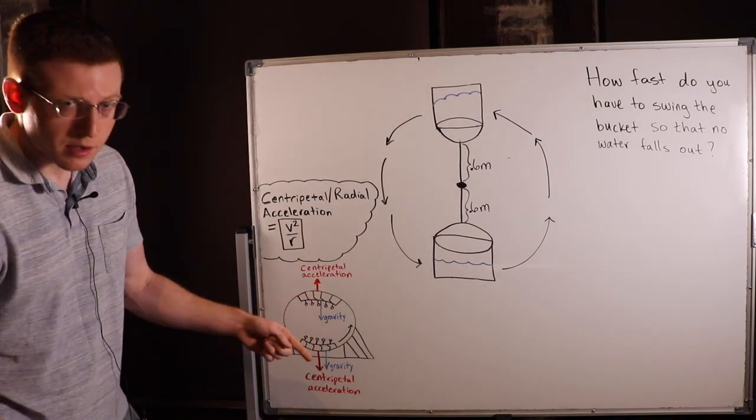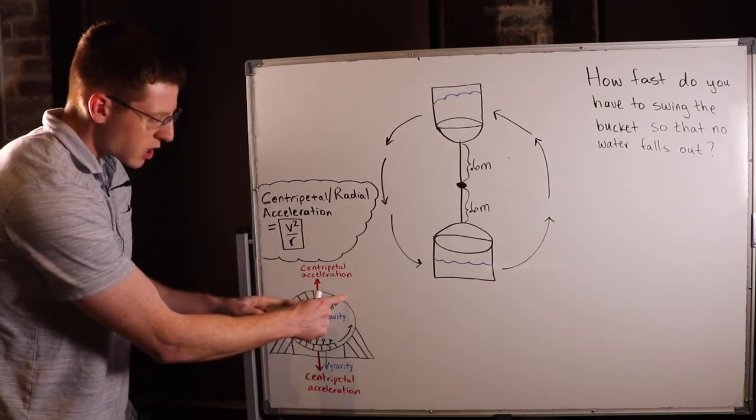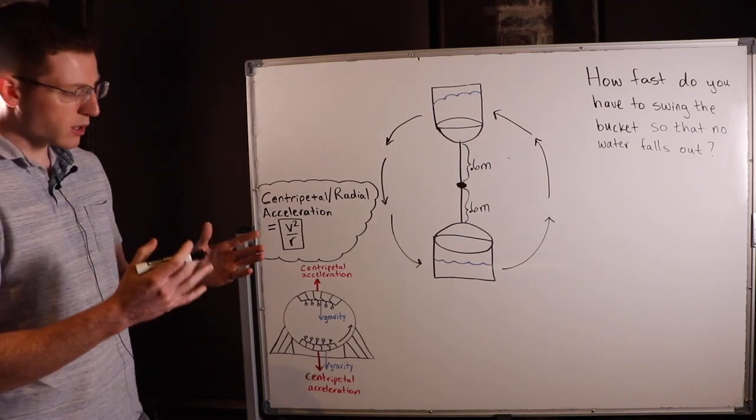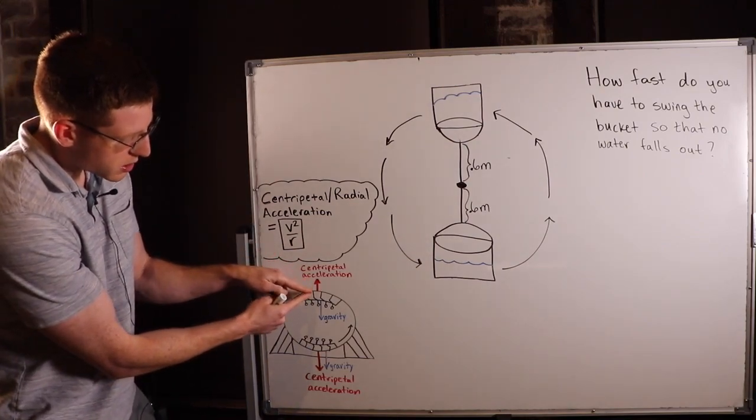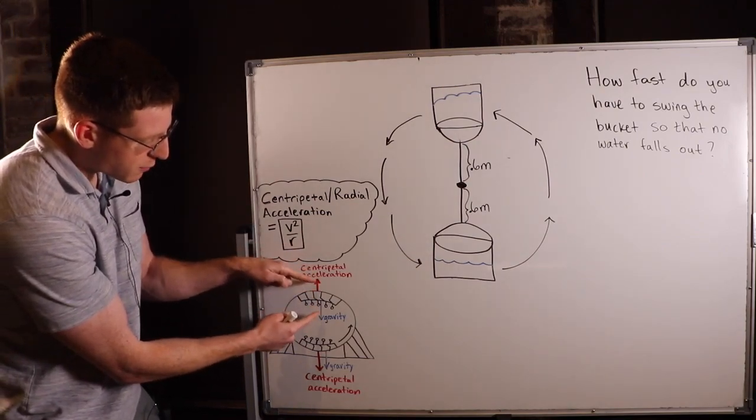But gravity is still acting straight down as it always does. That's why at the top of a roller coaster loop, you feel nearly weightless, because the centripetal acceleration almost cancels out the gravity acceleration.